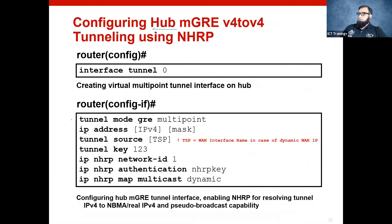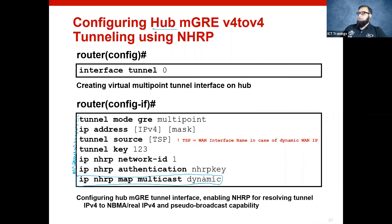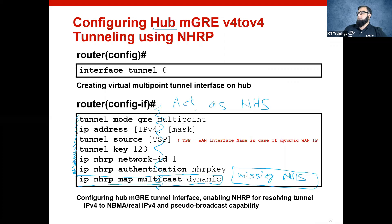On the hub, the same configurations apply up until the authentication part. The only difference is that here, map multicast is dynamic, so that the database entries being created based upon NHC registrations - all those who come and register - multicast traffic will be unicasted to all of them. So it is kind of a pseudo-multicast or pseudo-broadcast enablement. And here we are not defining NHS - you can see that NHS is missing. So if NHS information is missing, then that tunnel interface is going to act as NHS itself.